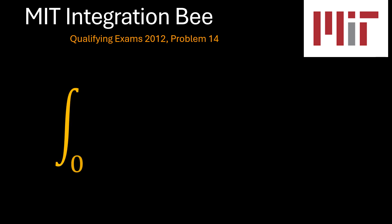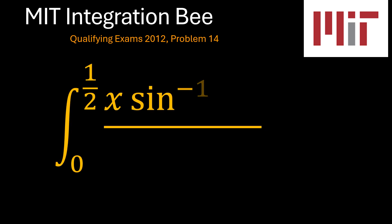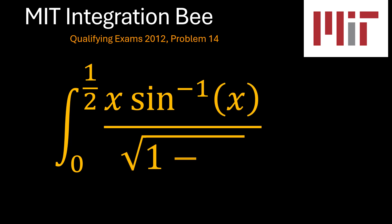Problem 14 of the MIT integration B qualifying exams, problem 12, which is the definite integral from x equals 0 to x equals one half of x times sine of x, all over square root of 1 minus x squared. This looks intimidating, but it's a pretty simple problem. Let's see how we can solve it.